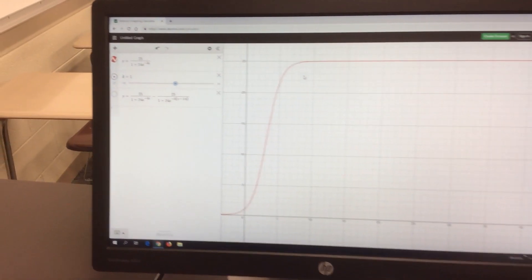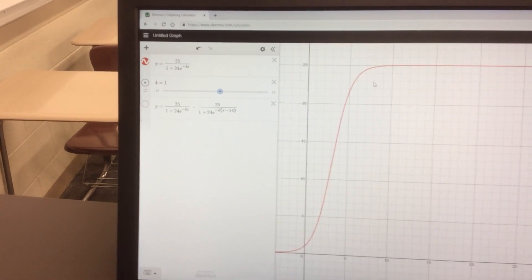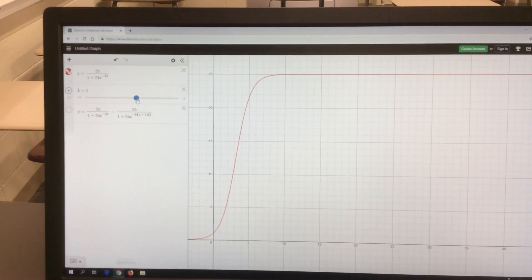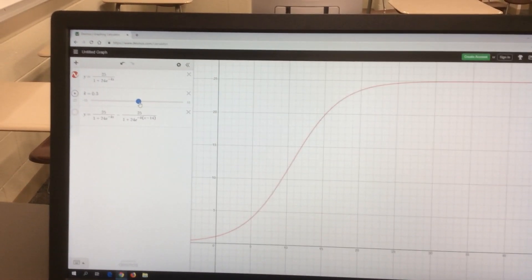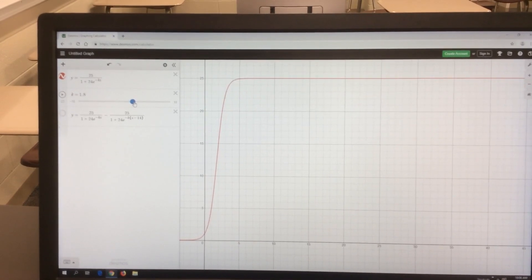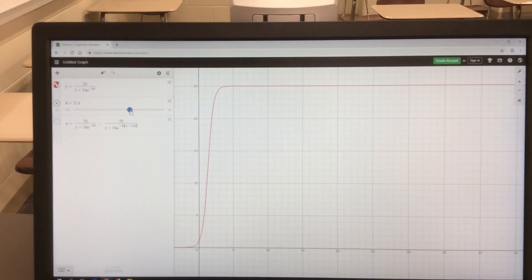Now I did plug in a value here that is unknown, and that's the value of K. K represents essentially the rate at which this thing spreads. If we decrease the value of K, we see it spread considerably slower, and if we increase the value of K, we see it spread considerably quicker.